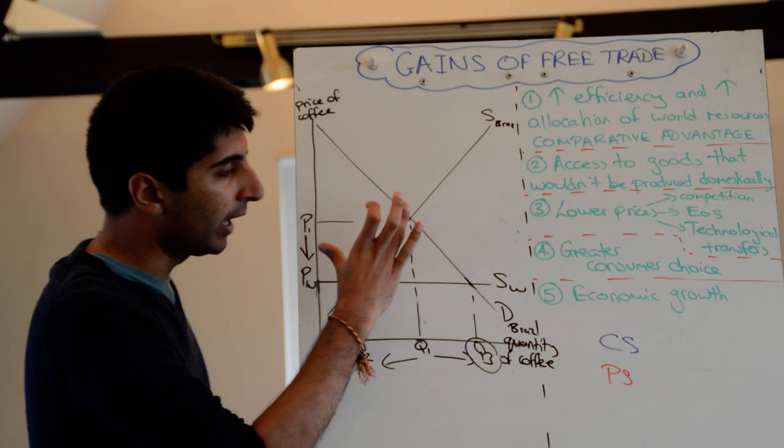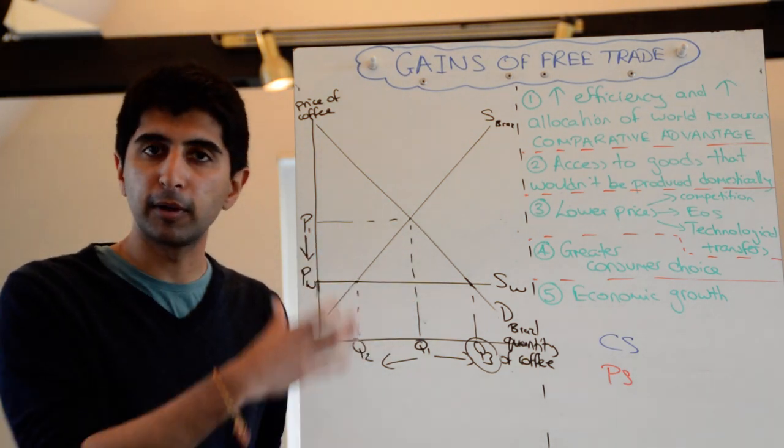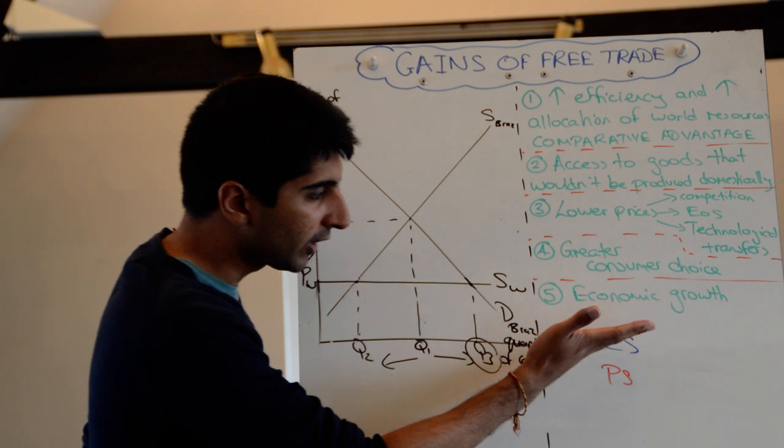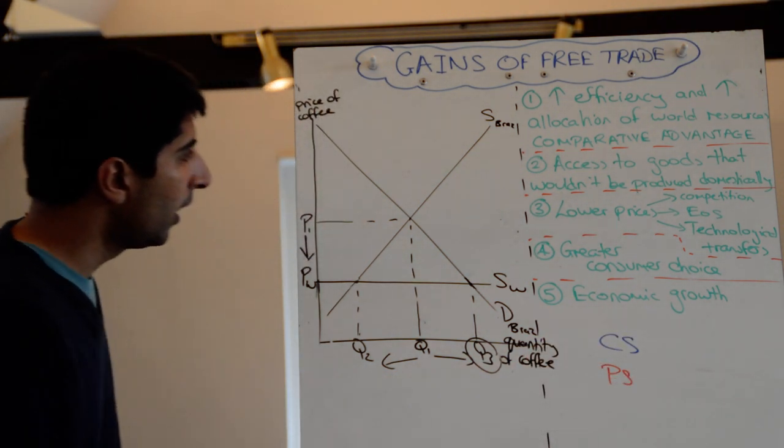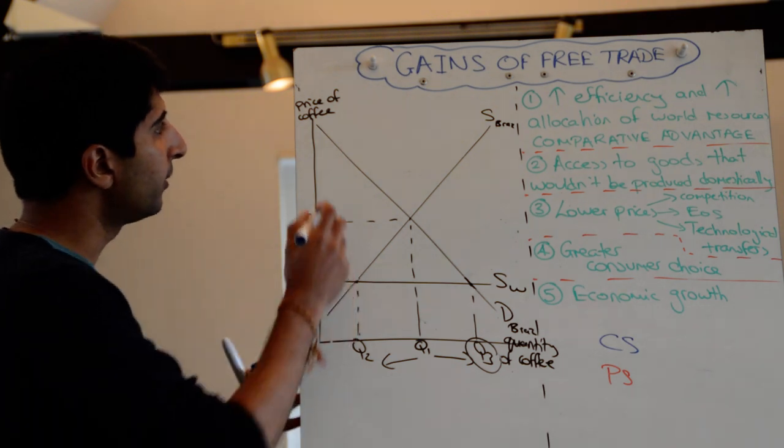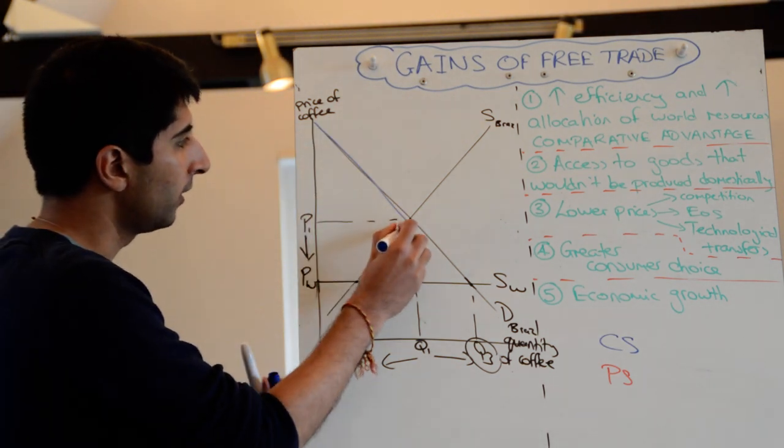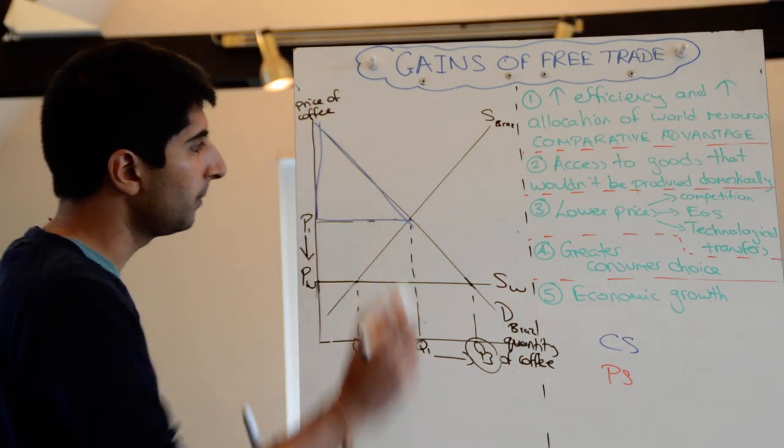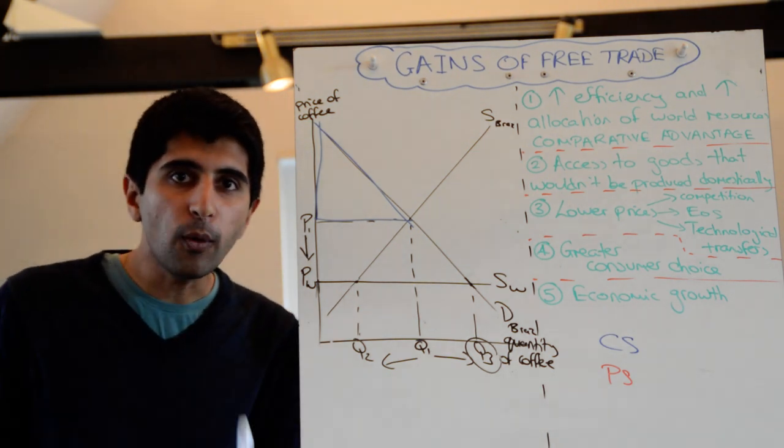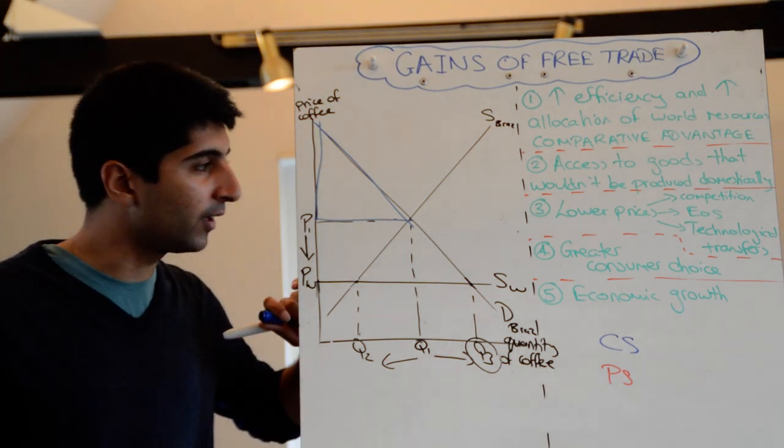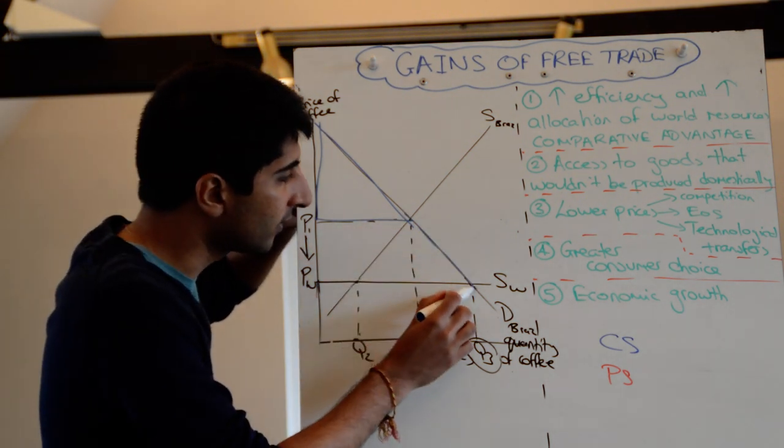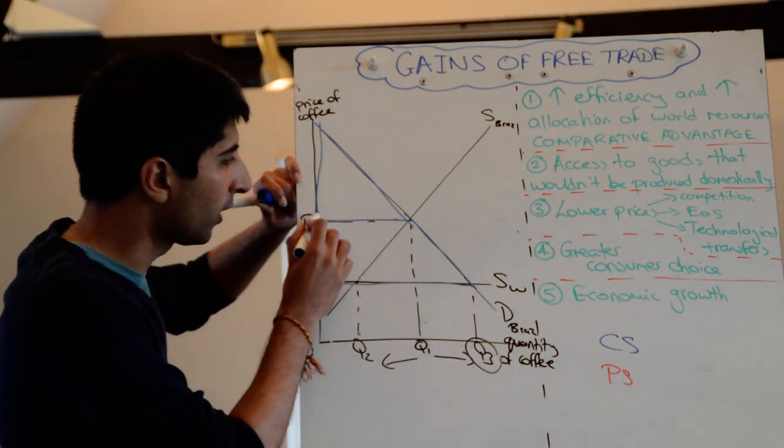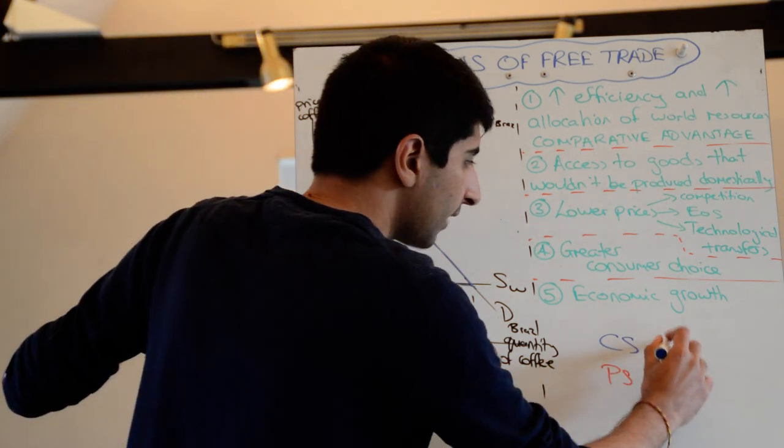We can look at this diagram in terms of efficiency gains, but I'm going to do that in a different video. We can also look at the consumer surplus and the producer surplus impacts here. So in blue, the initial consumer surplus in the Brazilian market was this blue triangle here. But now, with lower prices coming in from world suppliers, what's happened to consumer surplus? Well, from that blue triangle, it's now increased, hasn't it, to this much bigger blue triangle. So consumer surplus has increased. That's a good thing.